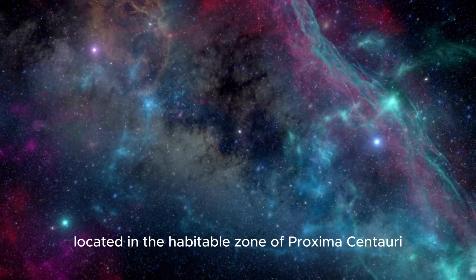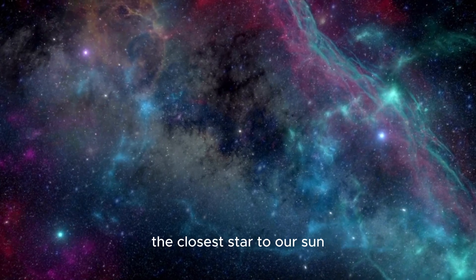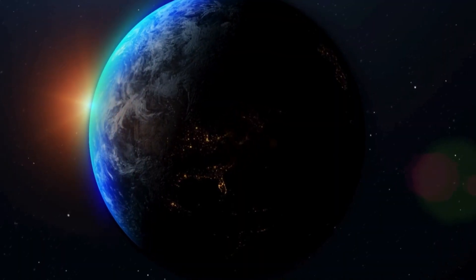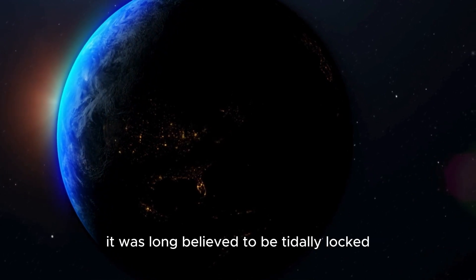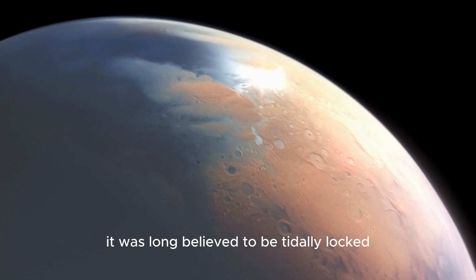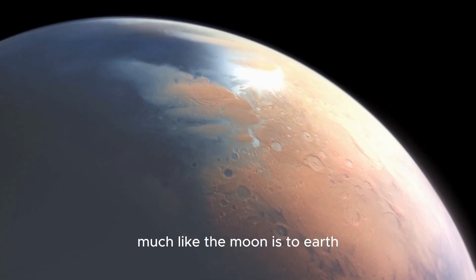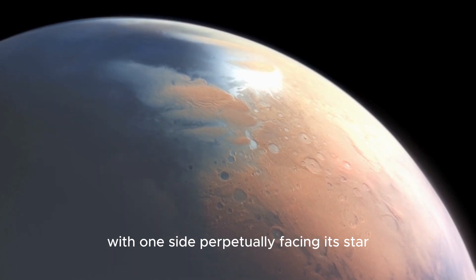Located in the habitable zone of Proxima Centauri, the closest star to our sun, Proxima b lies just 4.25 light-years away. It was long believed to be tidally locked, much like the moon is to Earth, with one side perpetually facing its star.